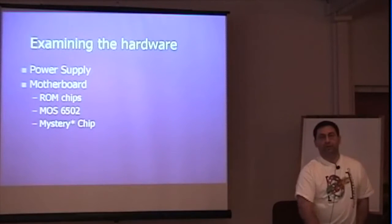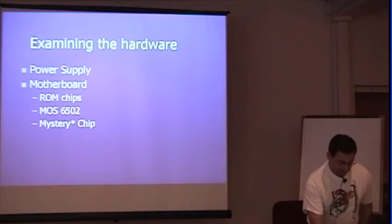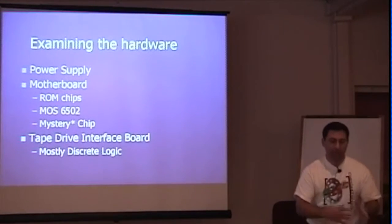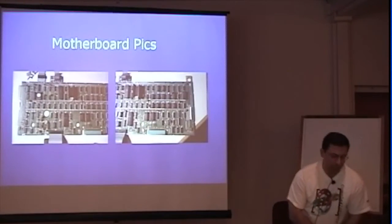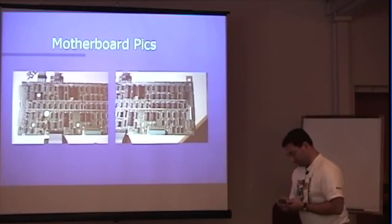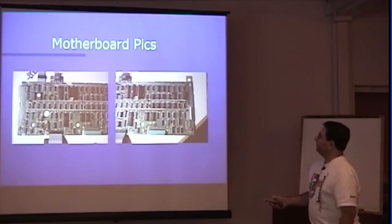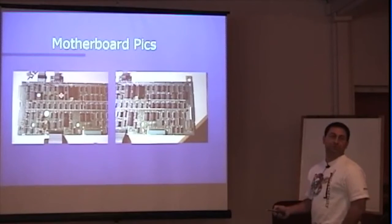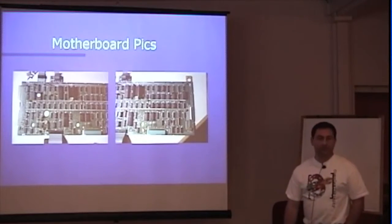What's inside this thing? You've got the power supply, a motherboard with a 6502, and then there was a chip I labeled the 'mystery chip.' Then there's another board with tape interface logic, which is mostly discrete logic. Here are pictures of the motherboard — this chip with some kind of glue holding it down, a heat sink, epoxy on top, and no label on the bottom, is the mystery chip. This basically looks like the kind of computer you'd expect to see from something built around 1980.